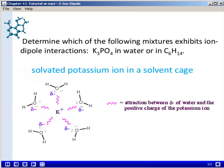This illustrates a solvated potassium ion, a solvent cage. So when the potassium phosphate dissolves in water, it breaks apart into potassium ions and phosphate ions. And the potassium ions will become surrounded by a sort of cage of water molecules.